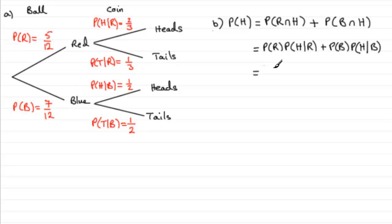This is very easy. Obviously, we've just got to put in these values. Five twelfths then, multiplied by two thirds, plus, and then seven twelfths times a half.